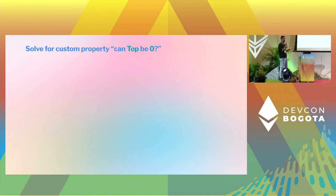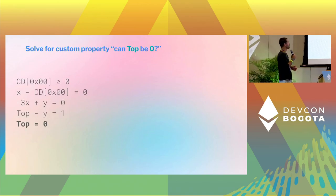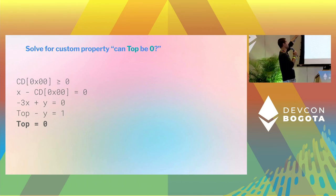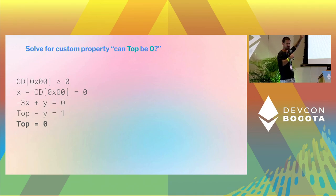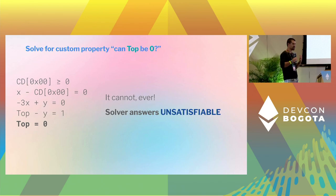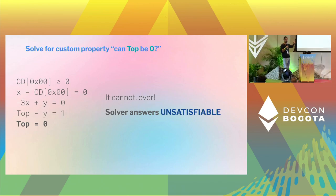We can also ask: can top be zero? All variables are on the integers — no reals or rationals. In this case, the solver says the system is unsatisfiable — it's inconsistent. There's no way all these constraints can be true at the same time.